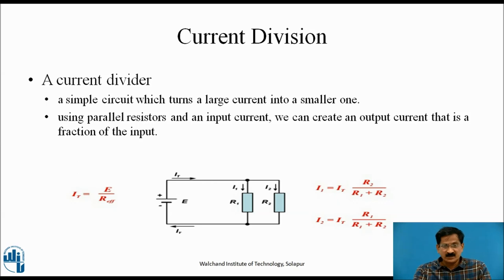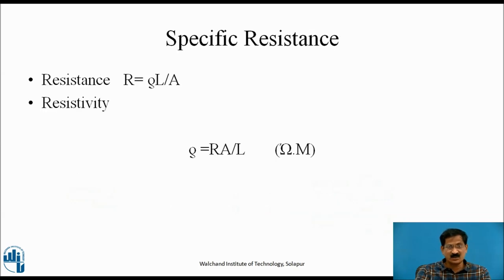Current division: This rule is applied to only two parallel resistances, with battery EMF shown across two parallel resistances R1 and R2. Total current IT equals I1 plus I2. I1 equals IT times opposite parallel resistance R2 upon R1 plus R2. Whereas I2 equals total current IT times R1 upon R1 plus R2.